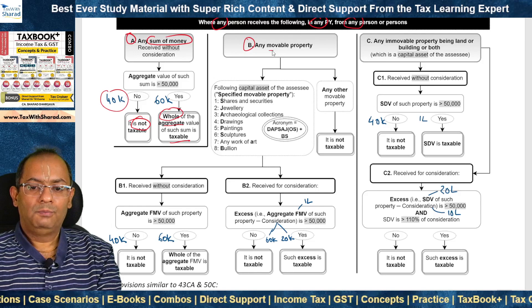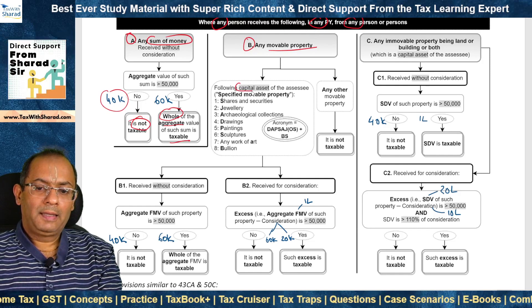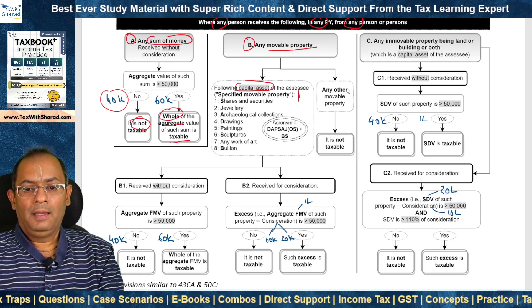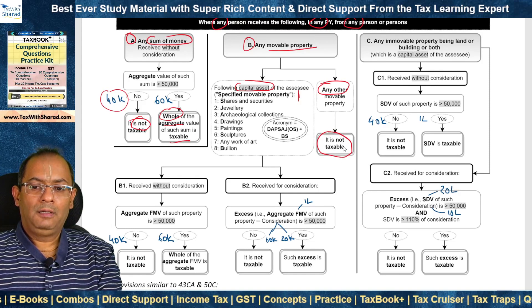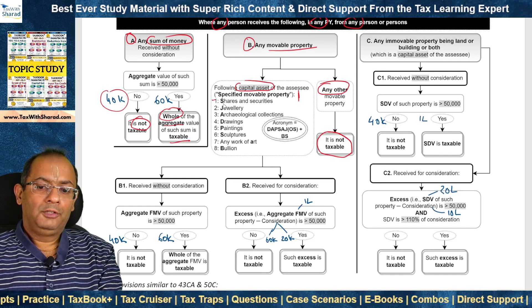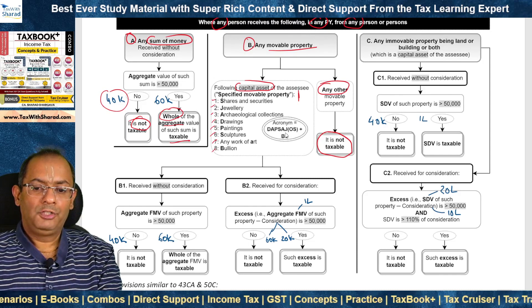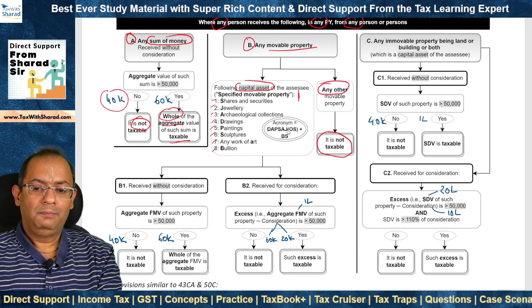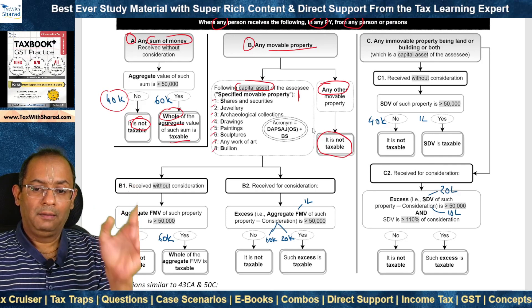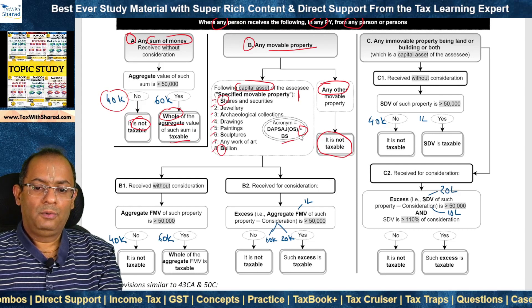Category (b) covers movable property. For this purpose, movable property means a capital asset of the assessee which is listed — referred to as 'specified movable property.' This includes shares and securities, jewelry, archaeological collections, drawings, paintings, sculptures, any work of art, or bullion. The acronym is DAPSAJ(OS) + BS — bullion and shares and securities added. If it is any other movable property (not specified), it is not taxable under Section 56(2)(x).